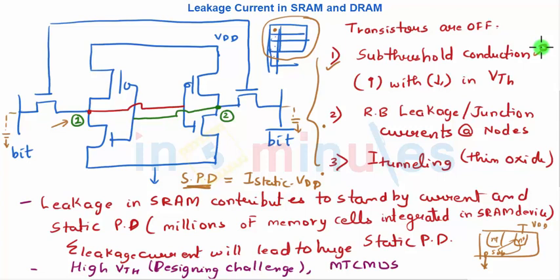This is quite a great challenging parameter which we need to understand. The other technique which one can use is multiple threshold CMOS circuits, where you have multiple threshold voltages used for different transistors in your block, which will help us in reducing our subthreshold current and overall reducing our leakage current, which in turn will reduce our static power dissipation. This is just an overview of leakage current in SRAM.